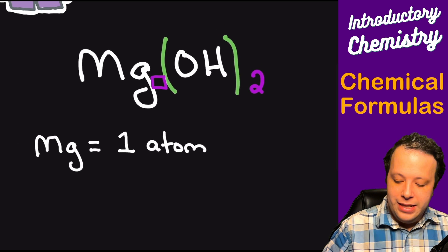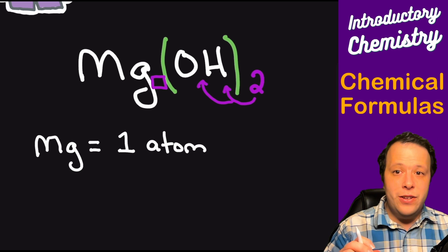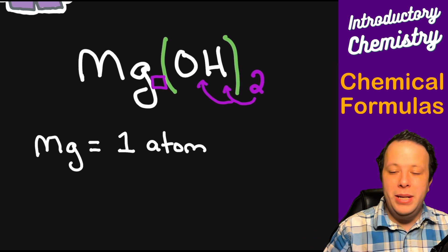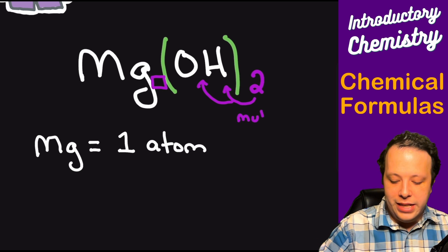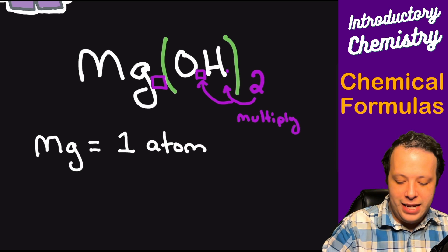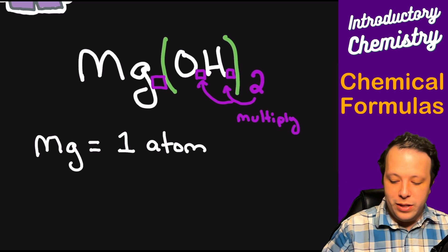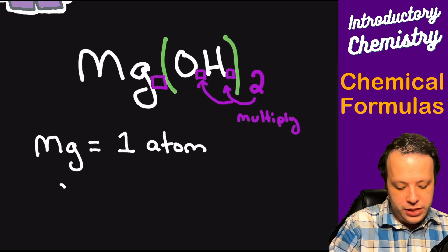Now, what about the parentheses here? How does this work? Well, the general idea here is that this two is going to be distributed to each of the individual elements within, meaning it's multiplying each one of those elements. So being that each one of these has a little box next to them, remember they're just one.